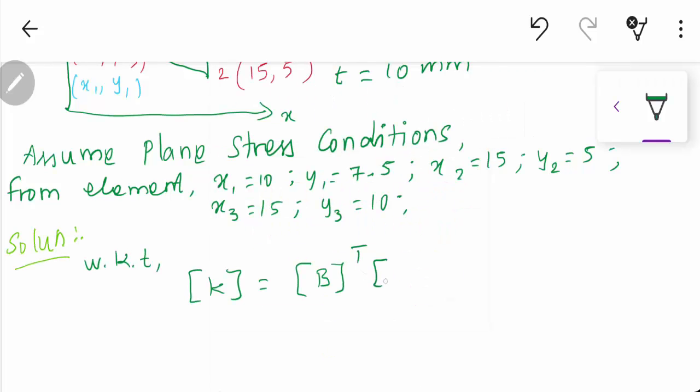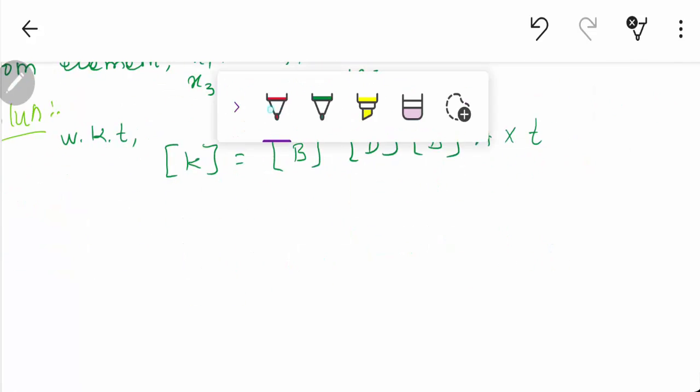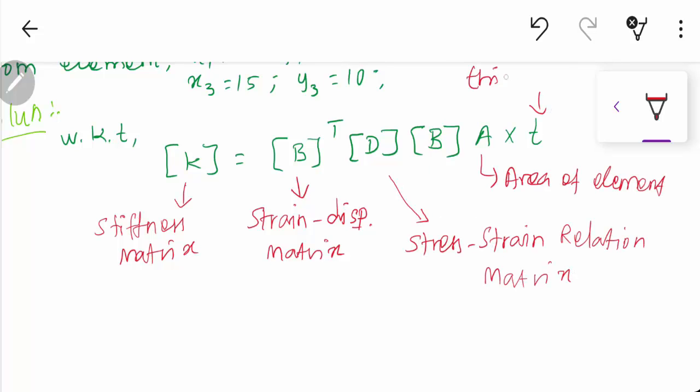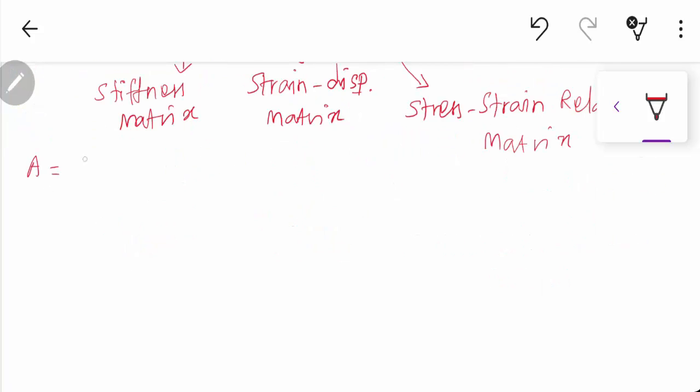The solution for the problem: we know that the stiffness matrix formula is B^T D B times A times t. That is the stiffness matrix K, where B is the strain displacement matrix, D is the stress-strain relationship matrix, A is the area of the element, and t is the thickness. For calculating the area, we have a formula: one by two, one x1 y1, one x2 y2, one x3 y3.